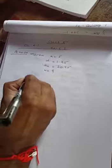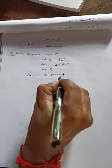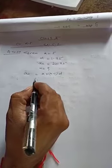So here, what is given: a = 5, d = 1.75, and an = 20.75. We have to find n. For this, we use the formula: an = a + (n-1)d. Now we can substitute the values.